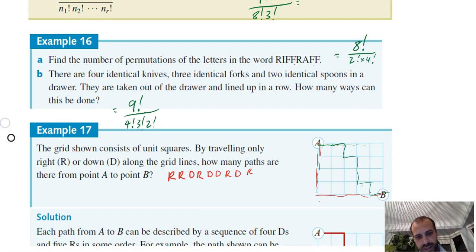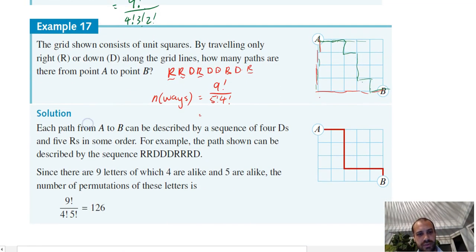So I can say that the number of ways is equal to nine factorial over the number of repeated letters in the first group, one, two, three, four, five, five factorial, times the number of repeated letters in the second group, d, d, d, d, four factorial. And that's going to be a number, 120.